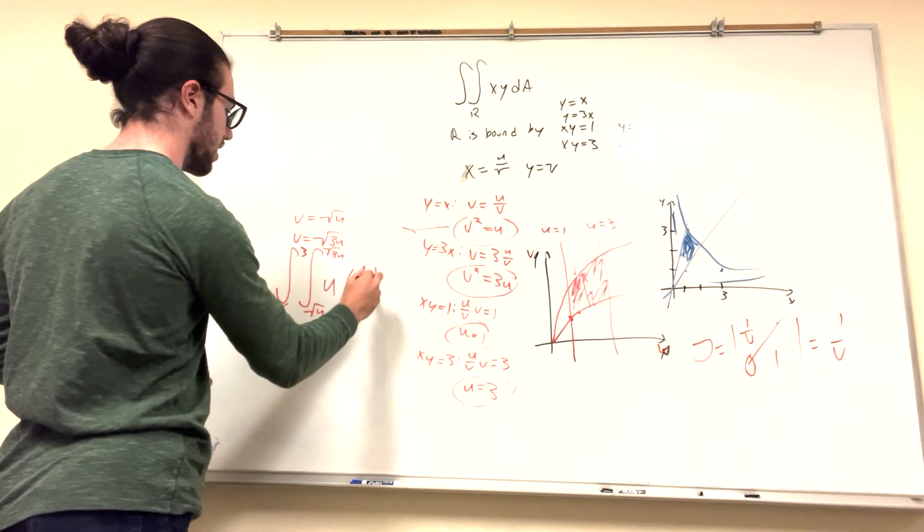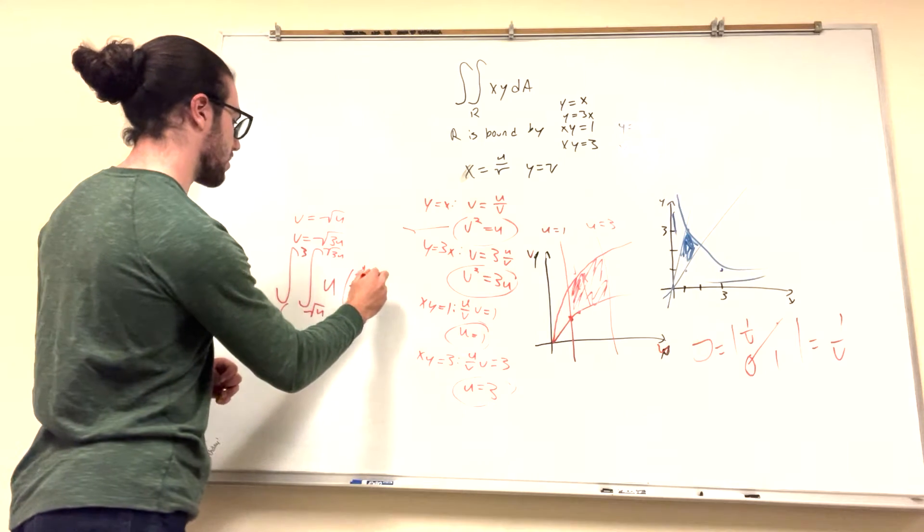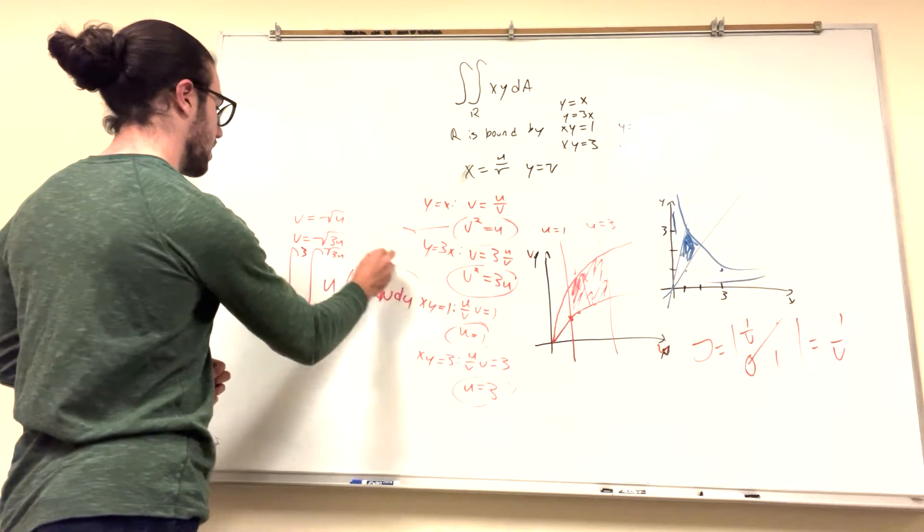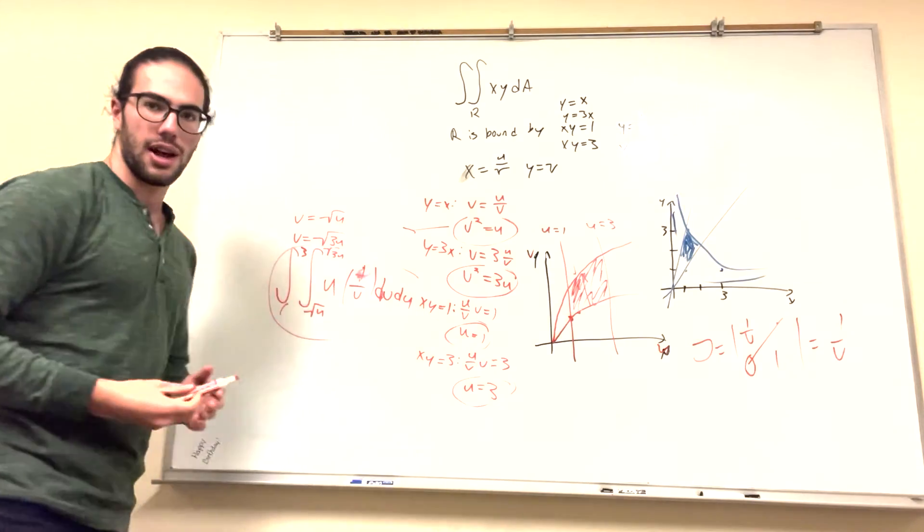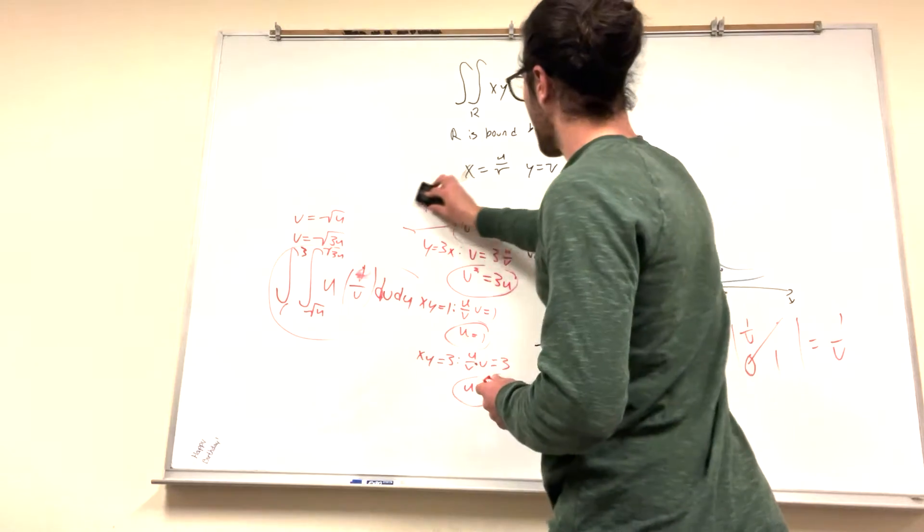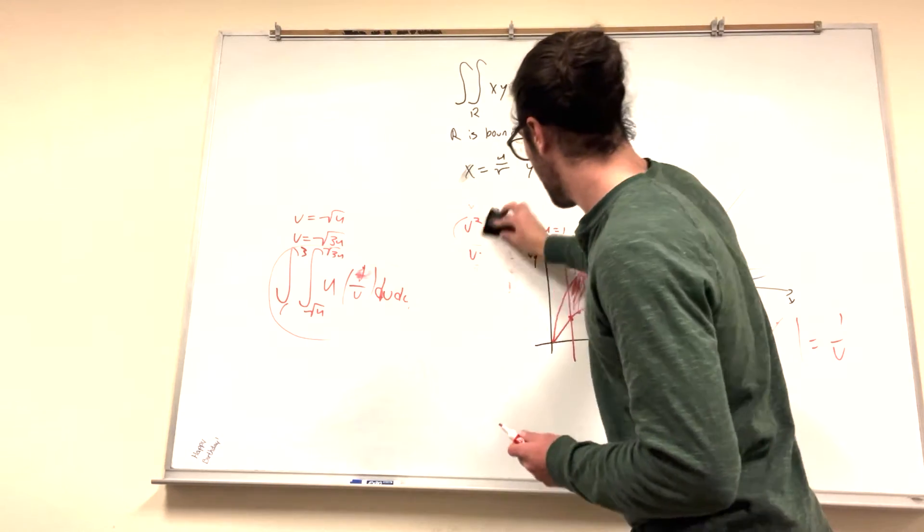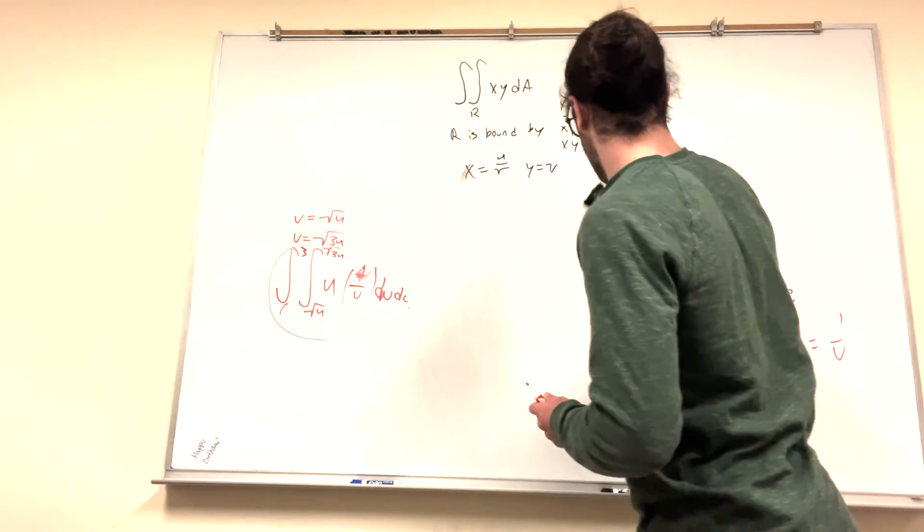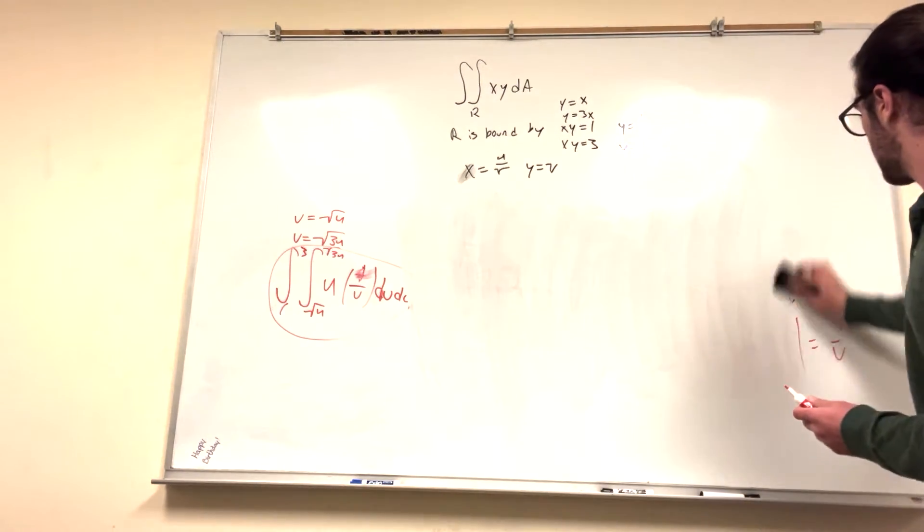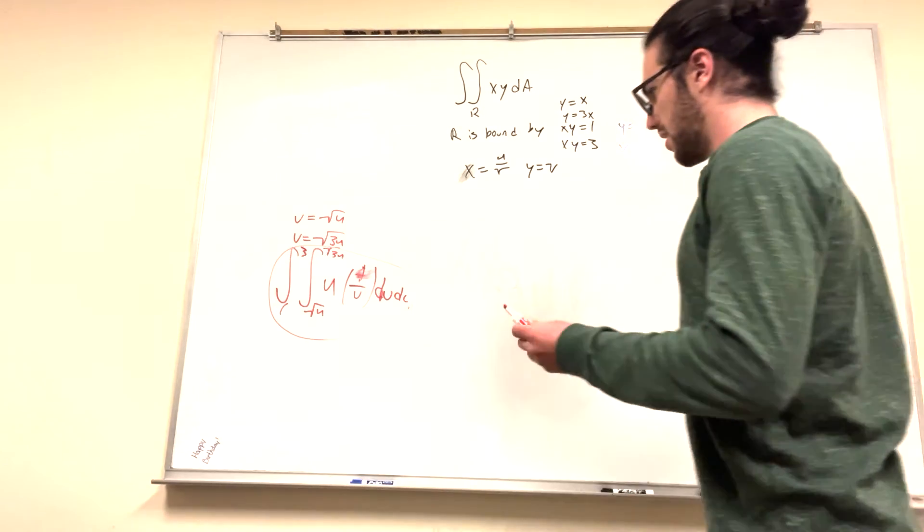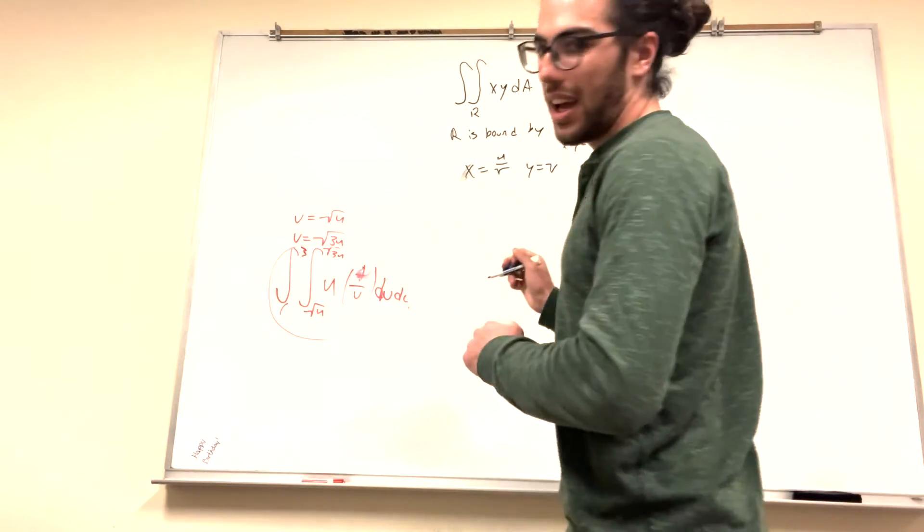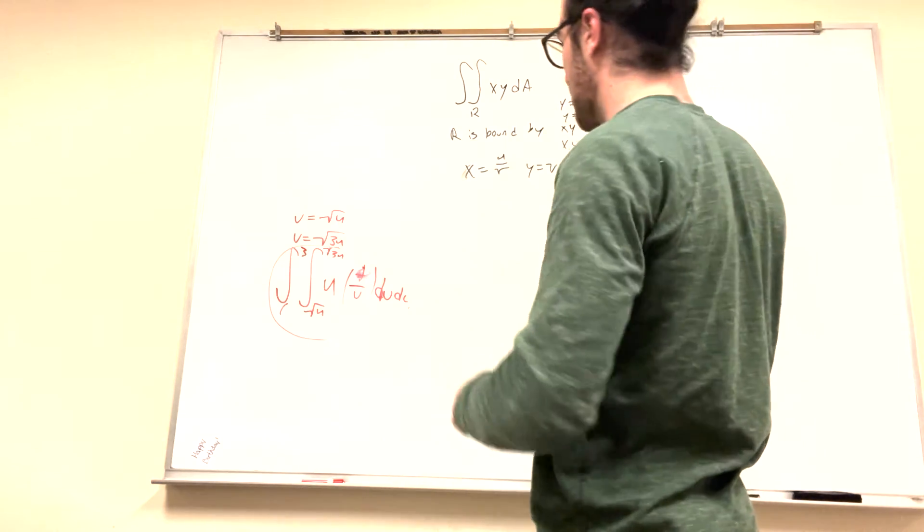Which means we go over to our integral, and we just put the Jacobian in. 1 over v. That looks really ugly. And then it becomes, so we're integrating with respect to v first. So dv, du. And that's our integral. Now we can go ahead and solve this integral. I'm going to need to do some erasing to solve it. Because I wrote too big.